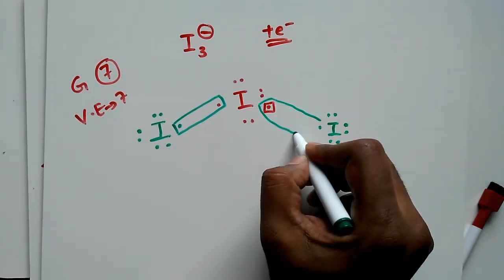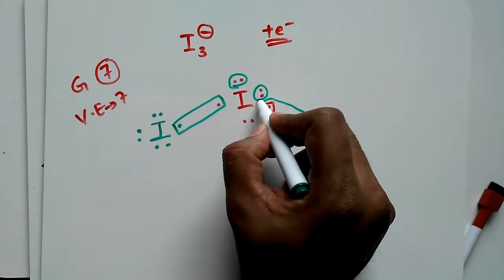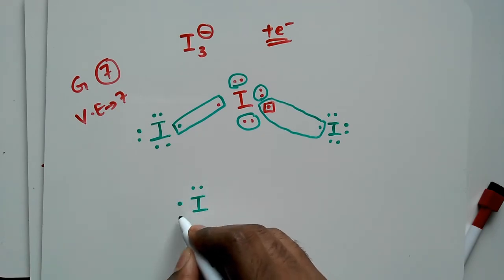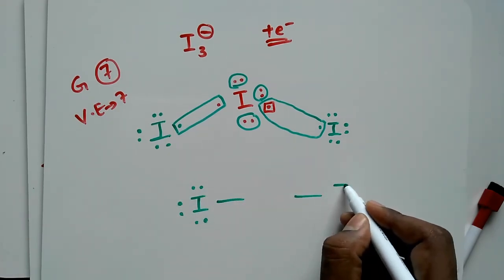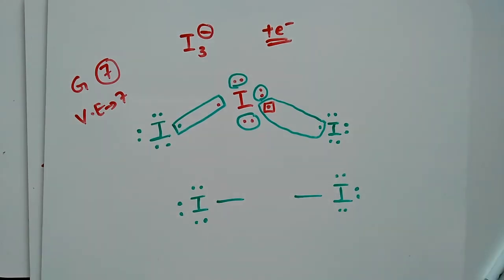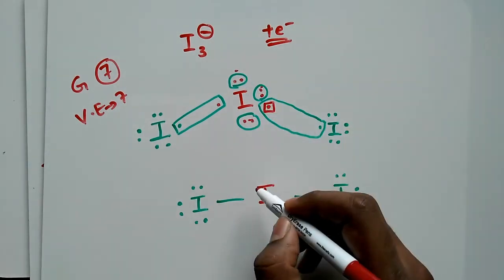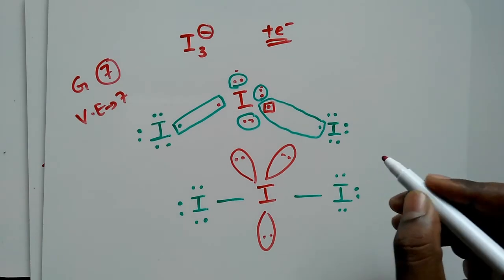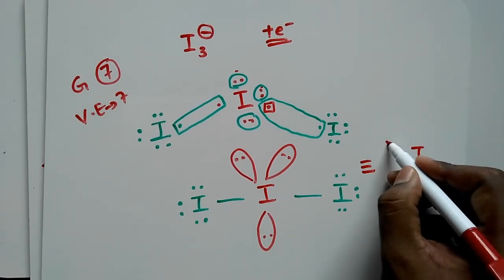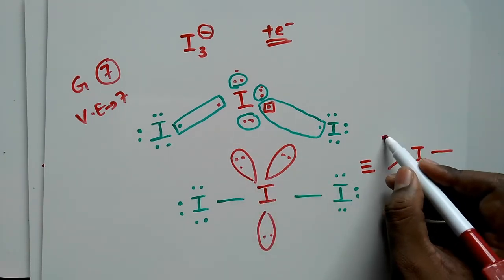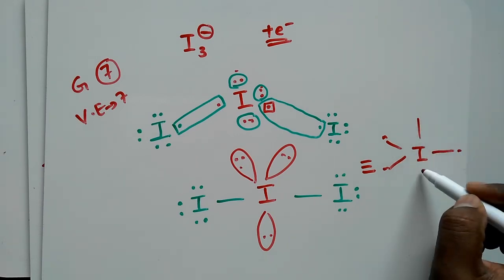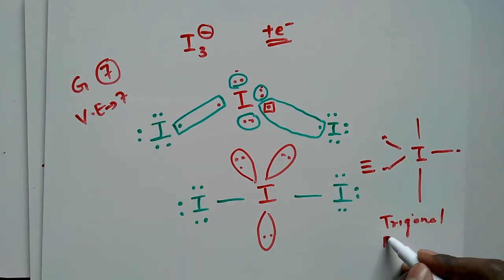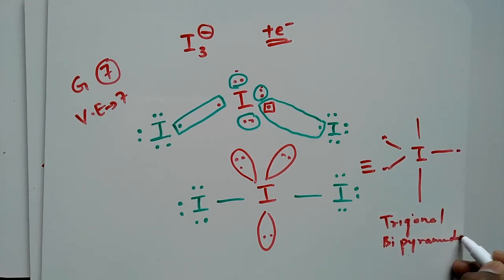So 3 electrons are pairing up. The central iodine bonds with the two peripheral iodines and has 3 lone pairs of electrons. With 2 bonds and 3 lone pairs, this geometry is trigonal bipyramidal. So the structure here is the trigonal bipyramidal structure.